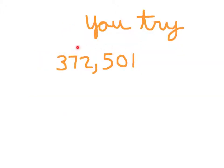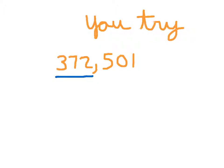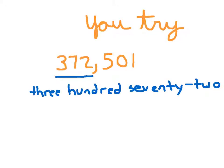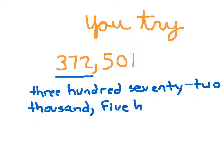Okay, it's time for you to try. Go ahead and write this number in word form. Please hit pause while you are working. So what we do is concentrate on each period. First is this period right here — that's 372,000. You'll notice that we put a hyphen for the 72 in three hundred seventy-two. And as I said, thousand. Did you remember to place a comma between each of your periods? And then we have 501. The way we write 501 is we just write five hundred one. So: three hundred seventy-two thousand, five hundred one. That is the word form.